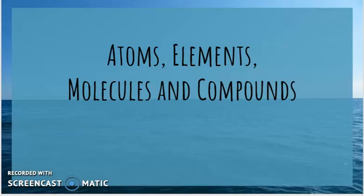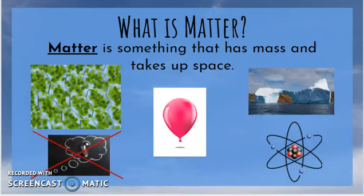As we dive deeper into what makes something living and cells, we're going to look at what builds cells. Considering matter and the things that make up all the living things we've discussed during the course of the semester. So what exactly is matter? It's something that has mass and takes up space. This is something you hopefully covered in sixth grade, where you're looking at things that are physical.